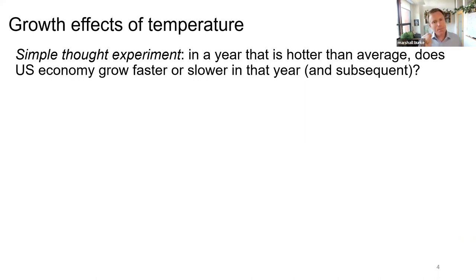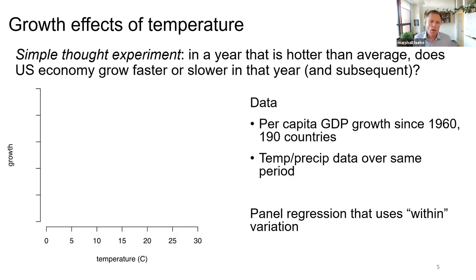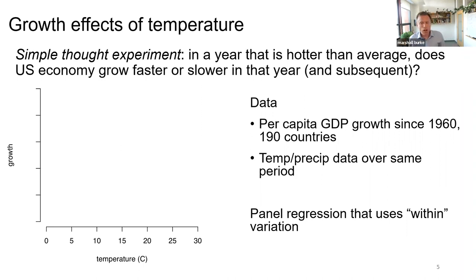We apply these causal inference approaches to GDP data, thinking across many different economies in many different years. We're looking at country-level outcomes globally, using data on real per-capita GDP growth for most countries back to the 1960s — roughly 200 countries, roughly 60 years of data per country — merged with temperature and precipitation data.